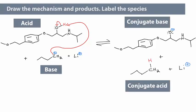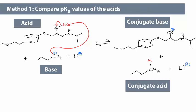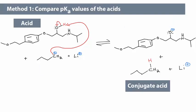To determine the direction of the equilibrium using method 1, we compare the acid with the conjugate acid. The acid's pKa value is approximately 16.